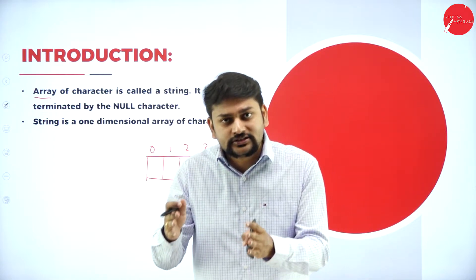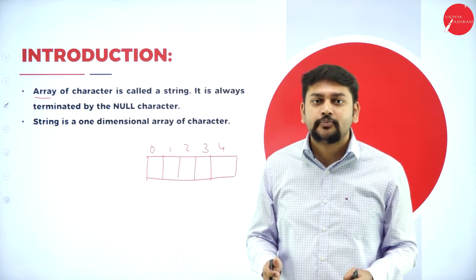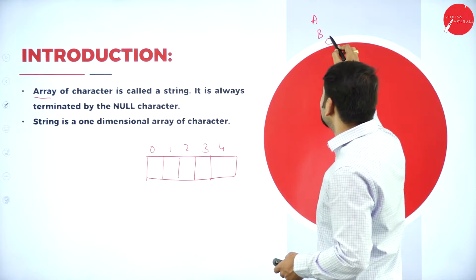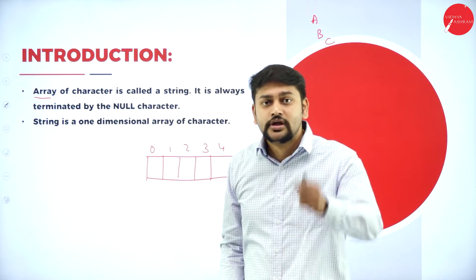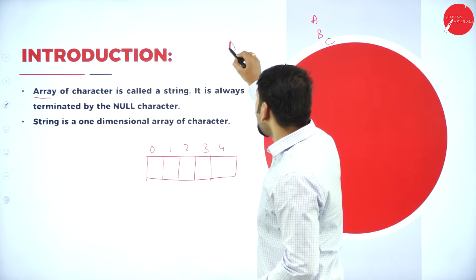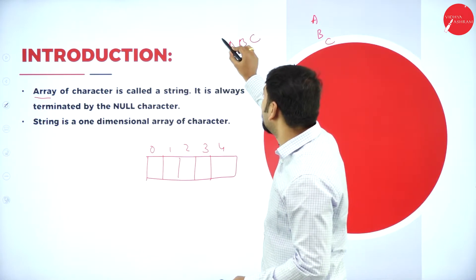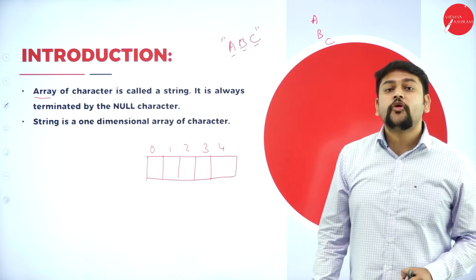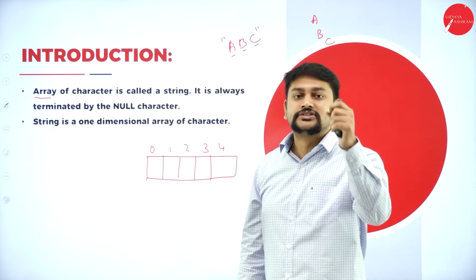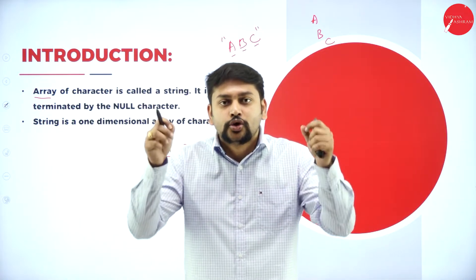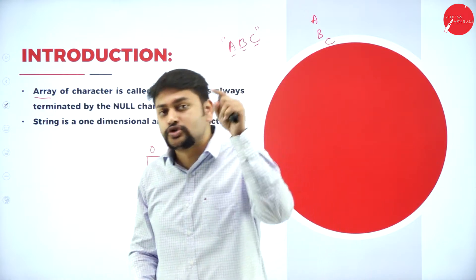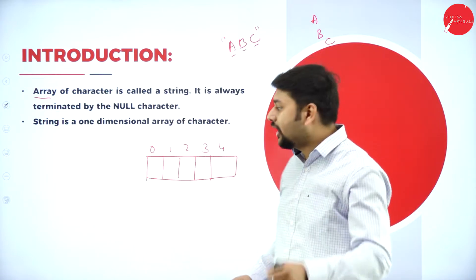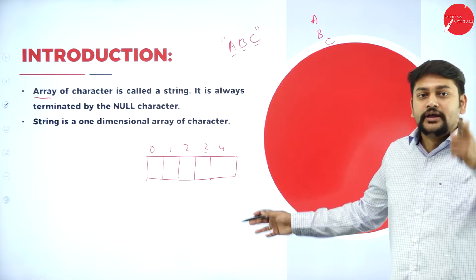A group of characters is what they call an array of characters. For example, if I just write A, or B, or C individually, I cannot call it a string. But if I write A, B, C together, you can call it a string because it is a group of characters. So what is a string? A group of characters enclosed between quotes, represented with the help of a character array.